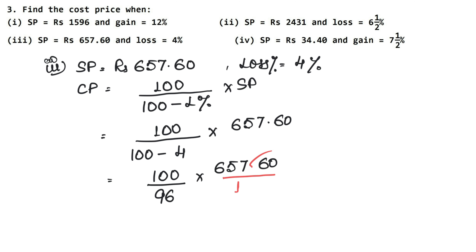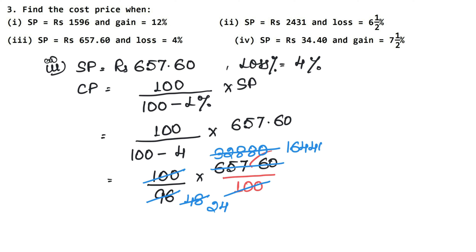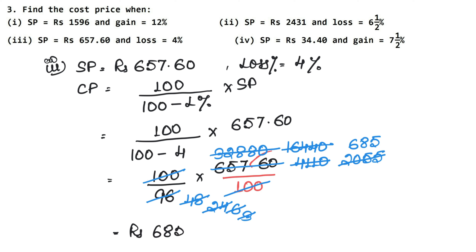The 100s cancel. Now working through the cancellation step by step: dividing 65760 by 96, simplifying with common factors — 2 fours are 8, 2 eights are 16, 2 threes are 6, 2 twos are 4, continuing to divide by 4, then by 3. Working through: 3 ones are 3, 3 sixes are 18, 3 eights are 24, 3 fives are 15 — giving us the cost price answer for part three.